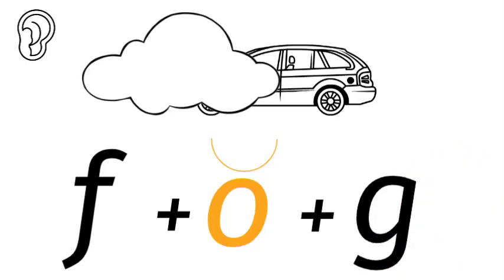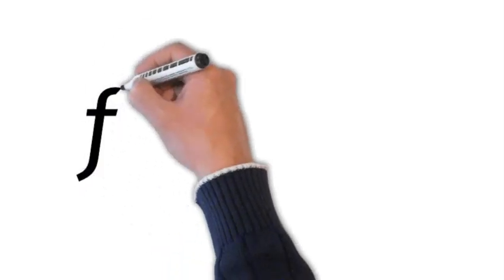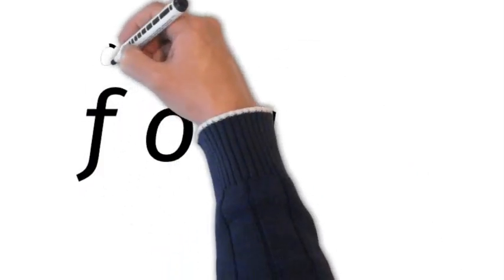Fog. There's a G at the end. Fog. Now if we go to the spelling bee and we have to spell the word, we must say the name of the letters. So we would say F-O-G.